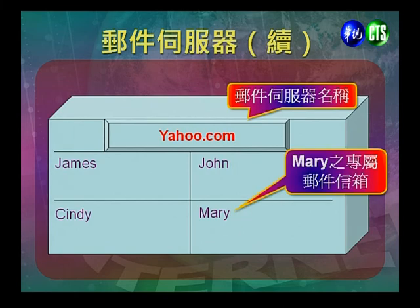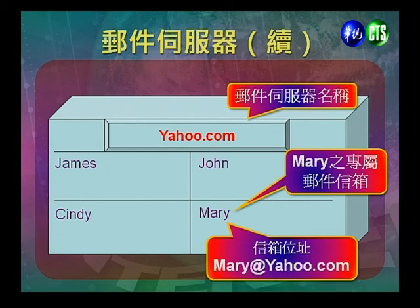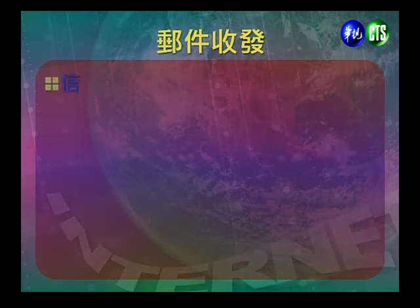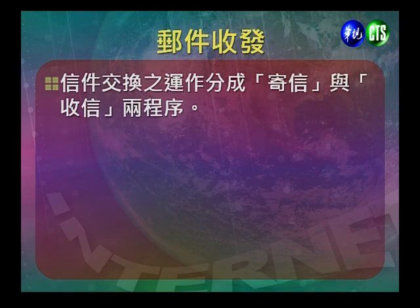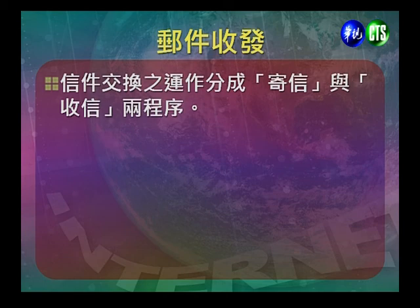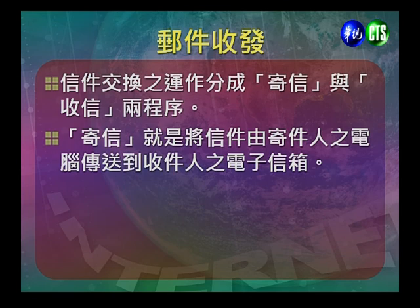邮件伺服器有一个名称，例如yahoo.com就是邮件伺服器的名称，底下有James、John、Cindy、Mary等电子邮件信箱。完整的信箱位置应该写成，比如说Mary@yahoo.com，at符号右边是邮件主机的位置，左边是个人的账号，整个串起来就是一个独一无二的地址。